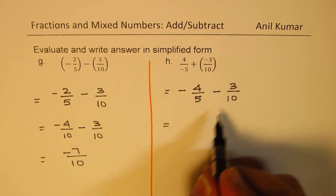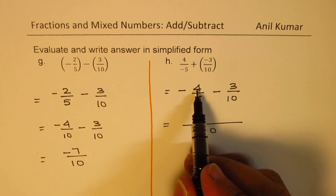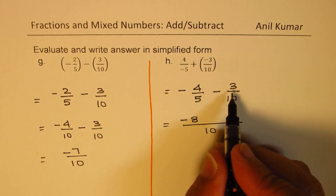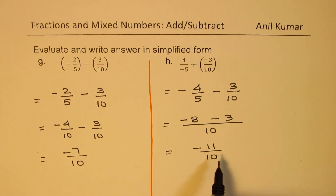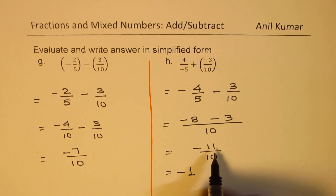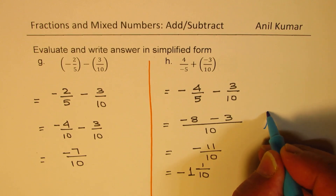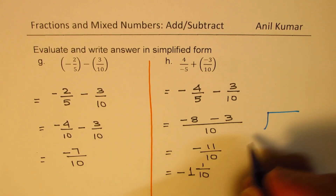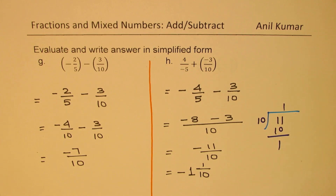The lowest common denominator can be 10. To make this 10, I have to multiply by 2, so I get minus 8, and here it is already minus 3. So what we get is minus 11 over 10. However, 11 is greater than 10 — this is an improper fraction. We could write this as a mixed number. Dividing by 10, we get one whole — negative of course — and remainder is 1, so we get negative 1 and 1 over 10 as our answer. Sometimes you may have to do long division to find this answer.